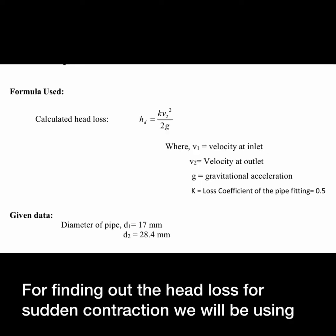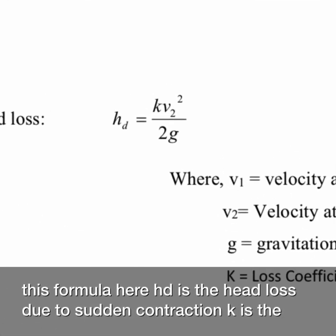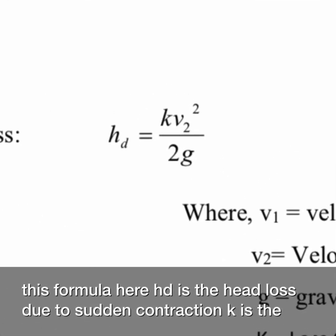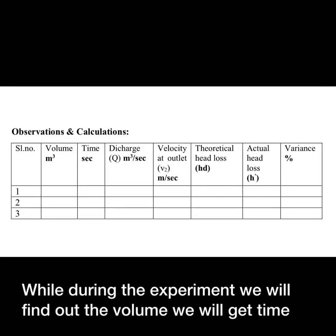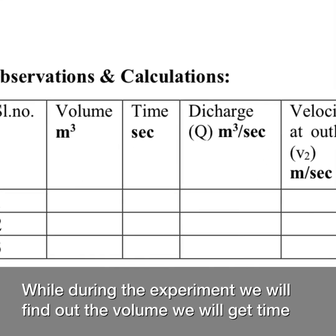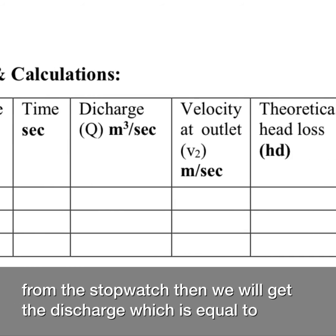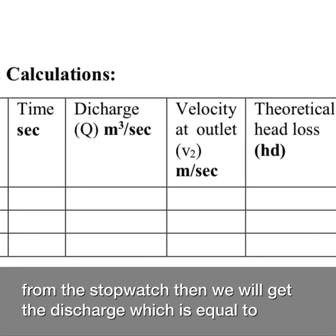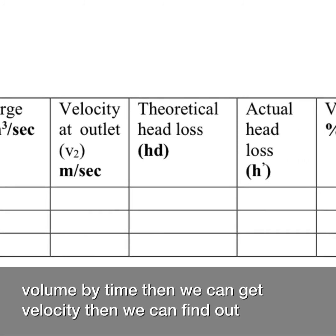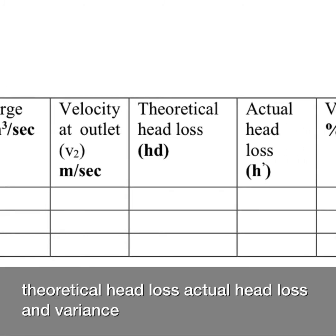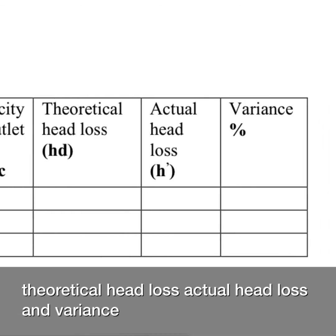For finding out the head loss for sudden contraction, we'll be using this formula: head loss due to sudden contraction equals k times v2 squared over 2g, where k is the constant and v2 is the velocity at the outlet. During the experiment we'll find out volume, get time from the stopwatch, then get discharge which is equal to volume by time, then we can get the velocity, then we can find out theoretical head loss, actual head loss, and variance.